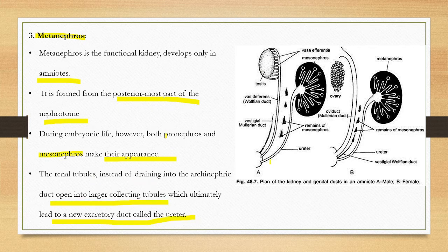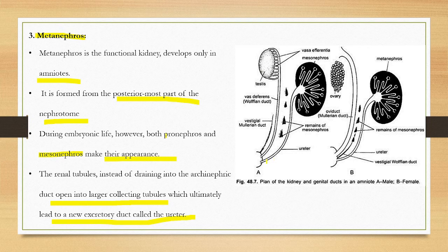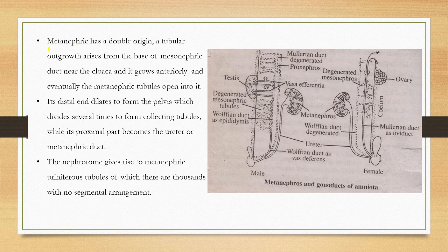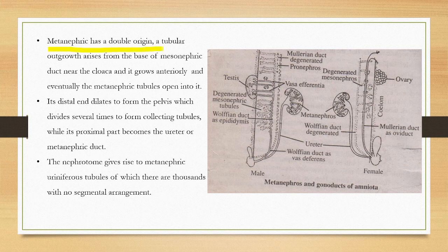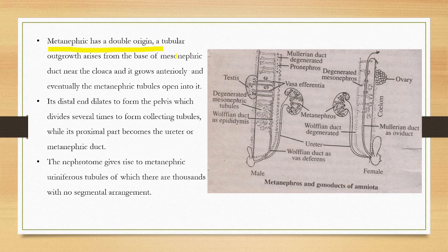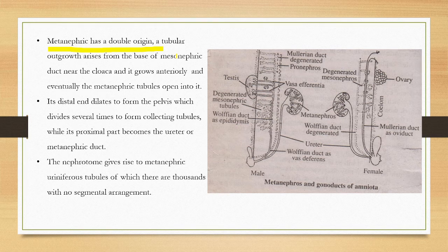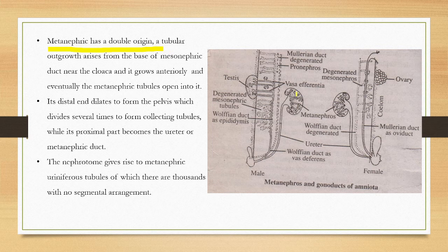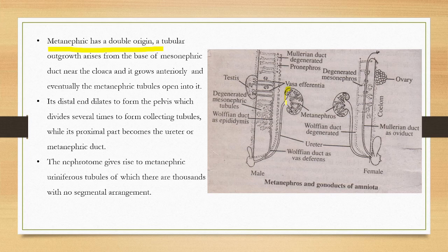The metanephric kidney has a dual origin. One kidney from two origins. Metanephric kidney is of double origin. It has two parts in formation: metanephric tubules and metanephric duct.